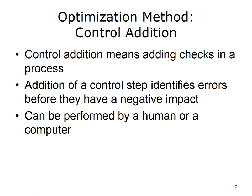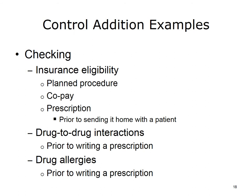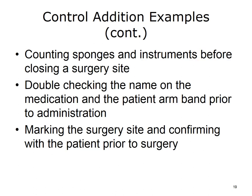Control addition means adding checks in a process. Addition of a control step identifies errors before they have a negative impact. This control can be performed by a human or a computer, i.e., it can be automated. Examples in healthcare include checking insurance eligibility of a planned procedure or copay, checking insurance eligibility of a prescription prior to sending it home with a patient, checking for drug-drug interactions or drug allergies prior to writing a prescription, counting sponges and instruments before closing a surgery site, double-checking the name on the medication and patient armband prior to administration, and marking the surgery site and confirming with the patient prior to surgery.